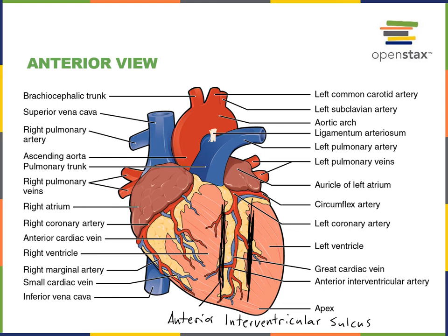Another structure visible in the surface anatomy on the anterior view is the ligamentum arteriosum, which connects between the pulmonary trunk and the arch of the aorta. This is a remnant from a structure known as the ductus arteriosus. In the fetal circulation, the ductus arteriosus was a vascular shunt — a blood vessel that allowed blood to bypass the pulmonary circuit, shunting blood from the pulmonary trunk into the aorta to go directly into the systemic circuit, as the fetal lungs were not functioning for gas exchange.